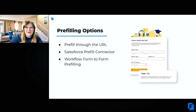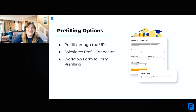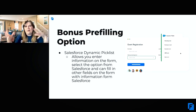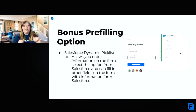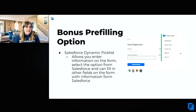Before we move on to connector errors, I want to mention a bonus option for pre-filling that I feel is often missed: Salesforce Dynamic Picklist. A lot of people think it just pulls in a picklist from Salesforce or grabs a record, but it not only does that — it allows you to enter in a record ID or something into your form, see the options from Salesforce, the records that were located, and then further pre-fill other information in the form directly from Salesforce. So it's a really great option for pre-filling.